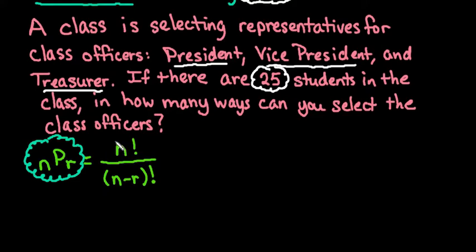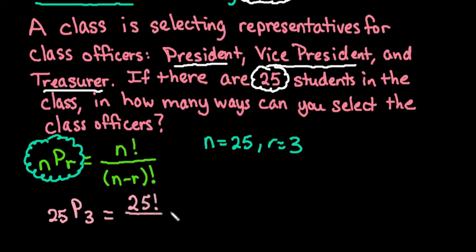So what we're going to do is we're going to use this formula to find this situation. For this situation, n is 25, r is 3, and so we would plug those in. So we would really have 25P3, and we would put this as 25 factorial over (25 minus 3) factorial.